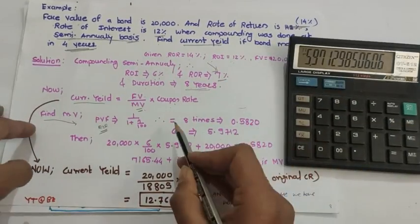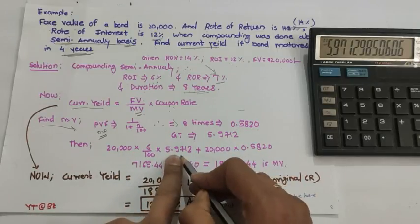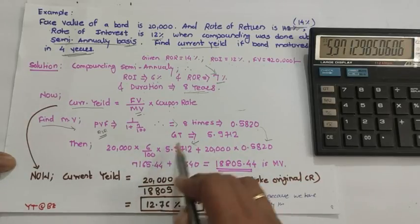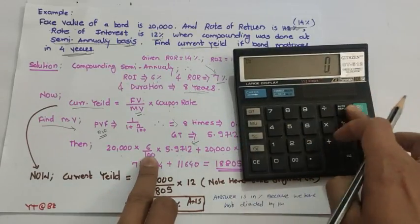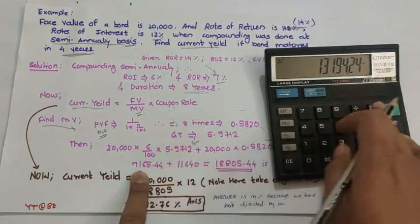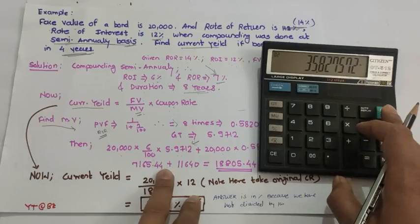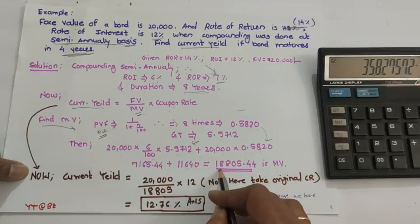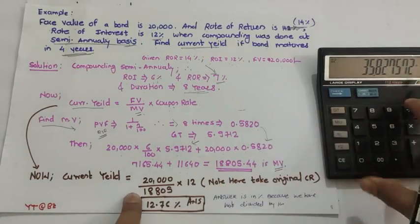Now put the two values into the market value formula: face value into coupon rate into the GT value (bigger value), plus face value into the smaller value. So: 20,000 multiplied by 6% multiplied by 5.9712, plus 20,000 multiplied by 0.8020. After solving you will get a market value of 18,805.44.